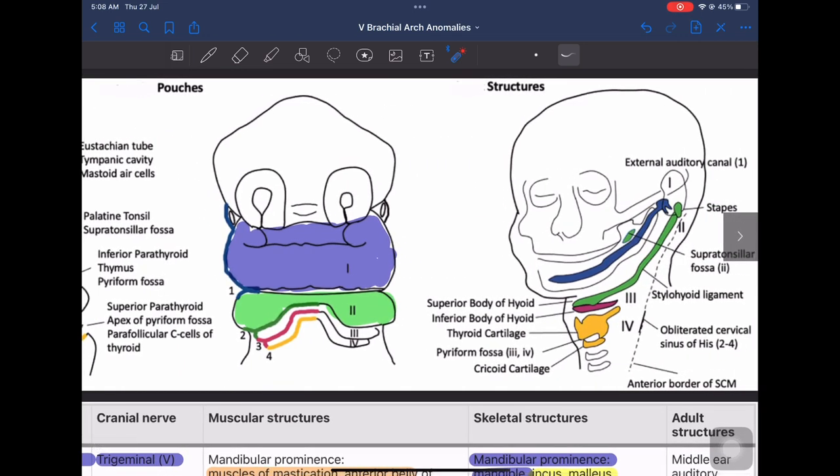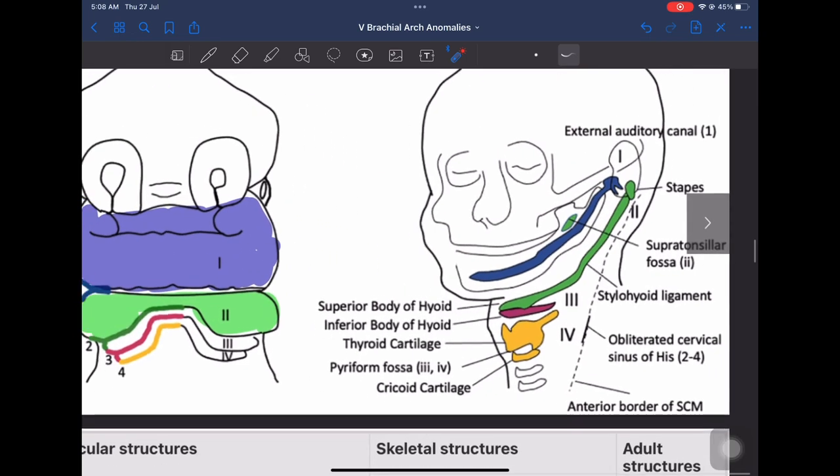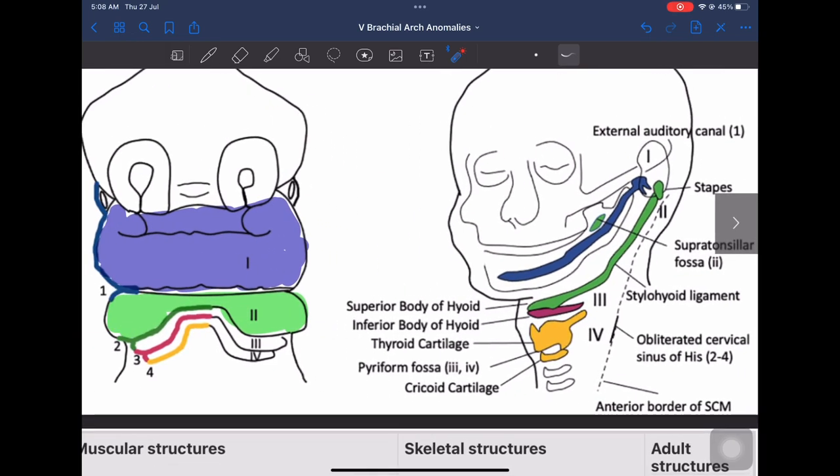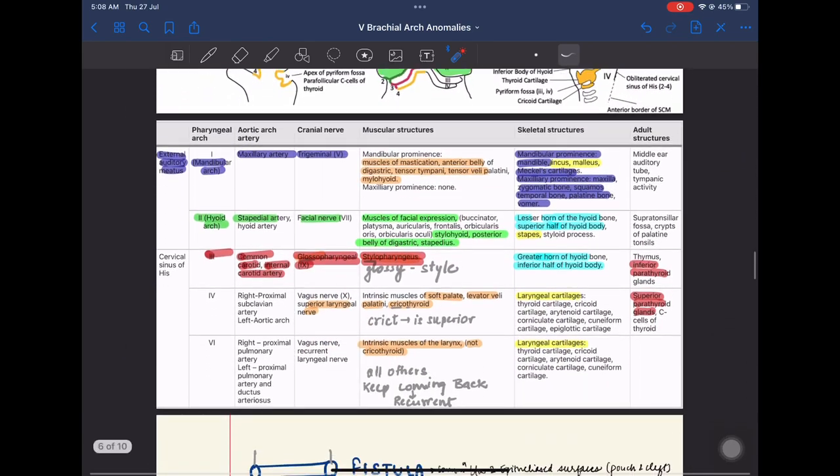Now the structures derived from the arches respectively are from the first or the mandibular arch we get the mandible, the body of mandible, the malleus and incus. From the second or the hyoid arch we get the superior part of body of hyoid. From the third and fourth respectively we get the inferior part of hyoid and the larynx.